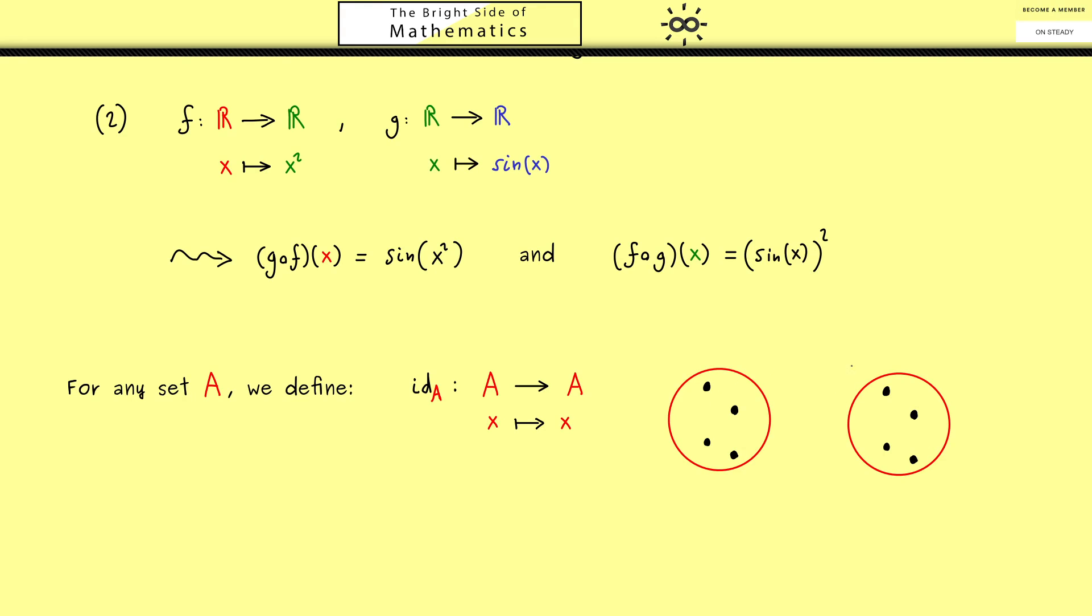So it's a map from A into itself and simply defined by sending x to itself. So in the picture the left hand side and the right hand side are the same and you simply connect the same points. You see it's one of the simplest maps you can think of.